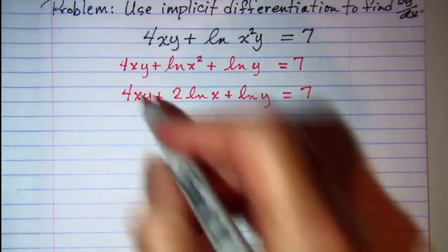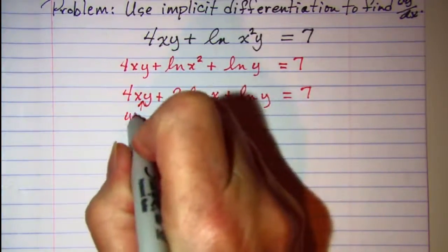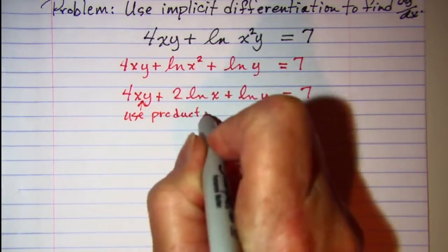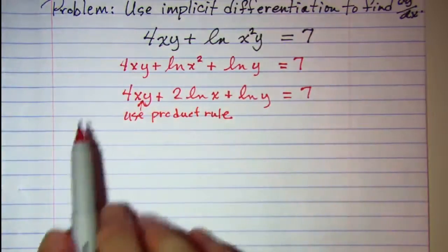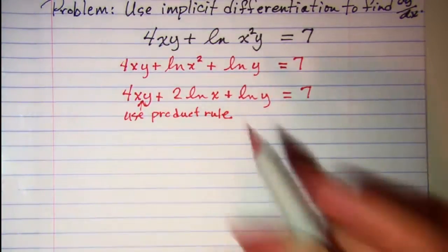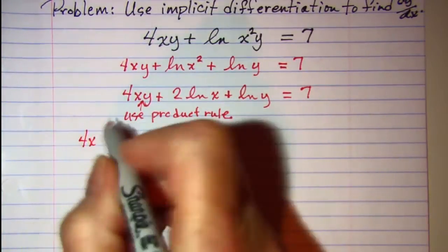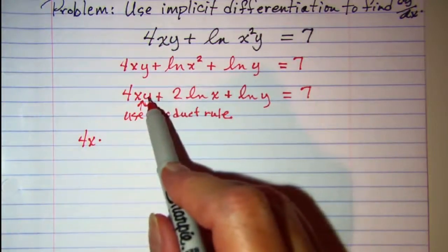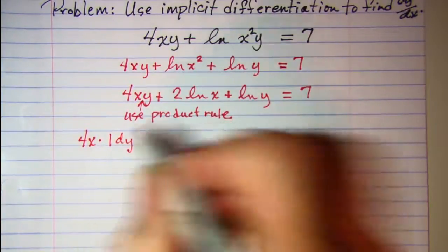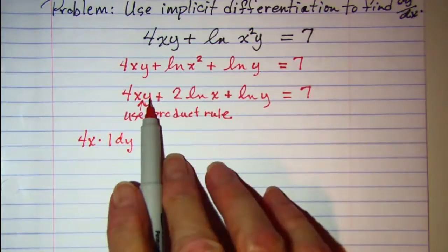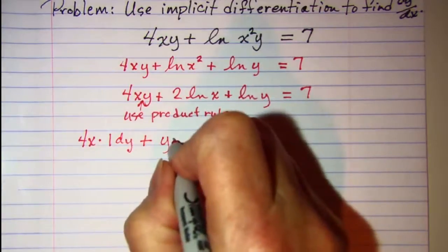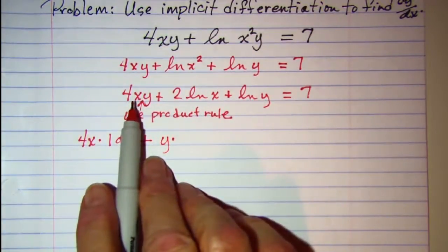To do this we have to use the product rule here. So I'm going to leave the first factor alone and multiply that by the derivative of the second factor, which is 1 dy. And then leave the second factor alone and multiply that by the derivative of the first factor.